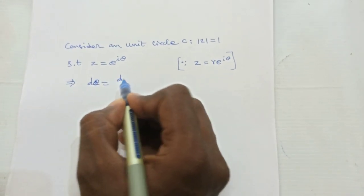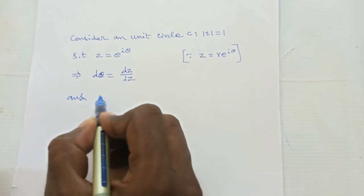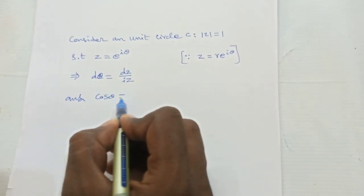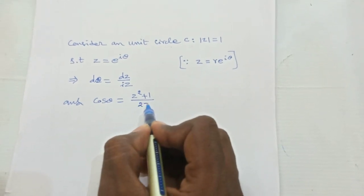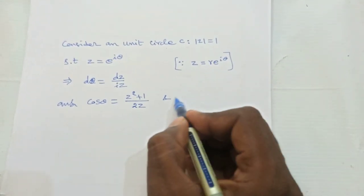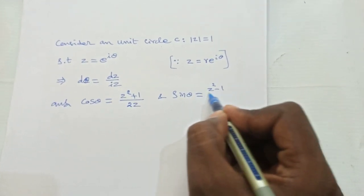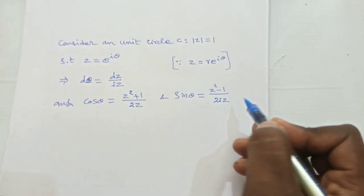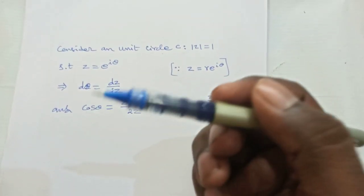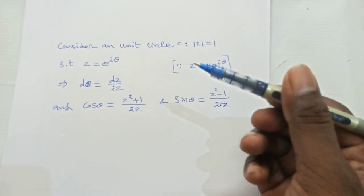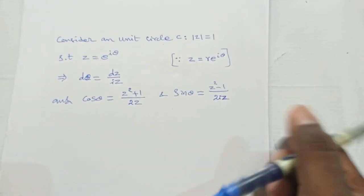From z = e^(iθ), we derive: dθ = dz/(iz), cosθ = (z² + 1)/(2z), and sinθ = (z² − 1)/(2iz). We substitute these values into the given integral to convert it entirely in terms of z, and then we can easily integrate.